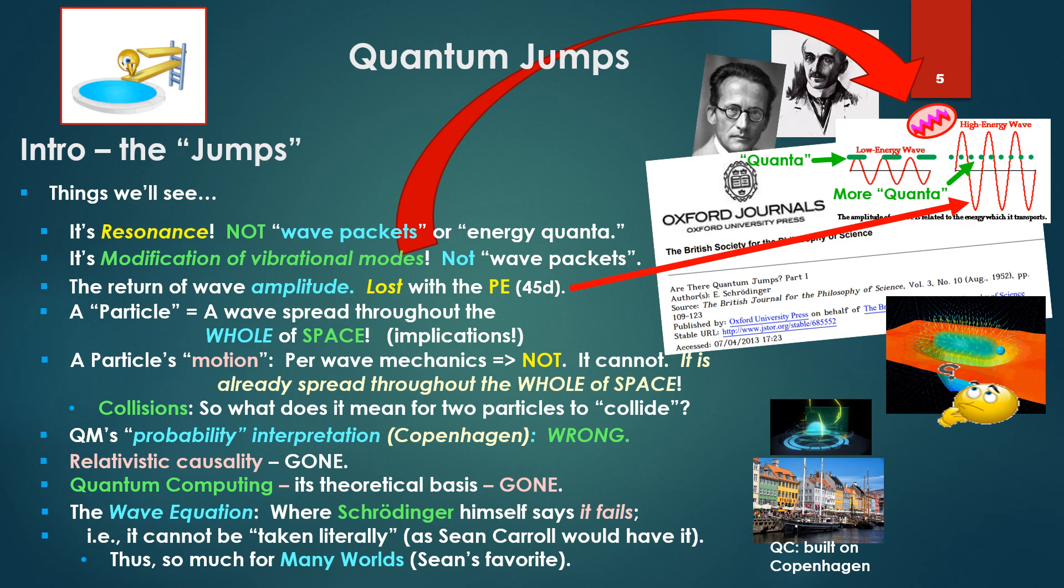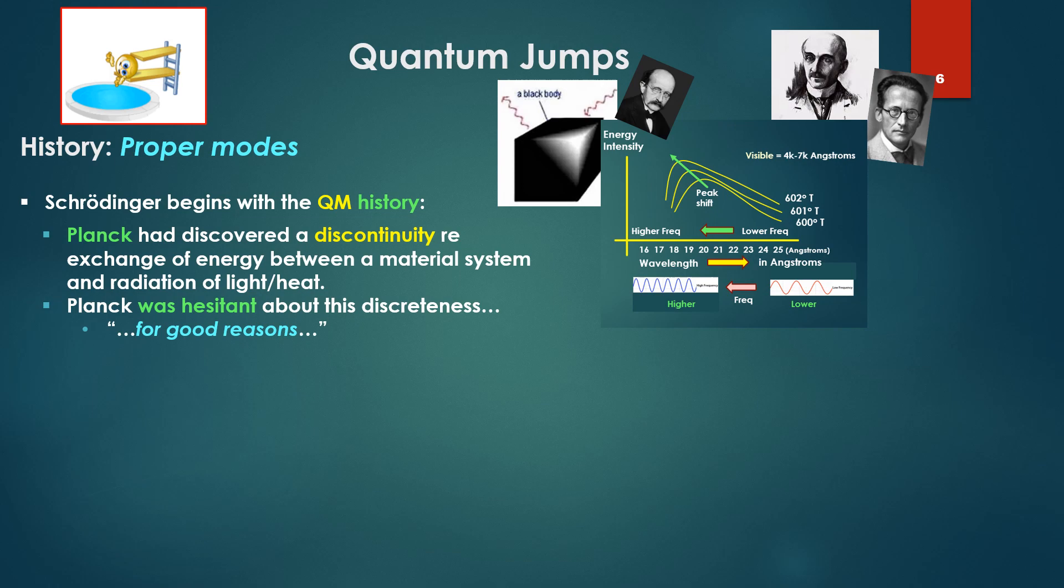The wave equation, where Schrödinger himself says it fails, that is, it cannot be taken literally, as Sean Carroll would have it, for example. There goes many worlds, his favorite, which is based on taking Schrödinger's equation literally.